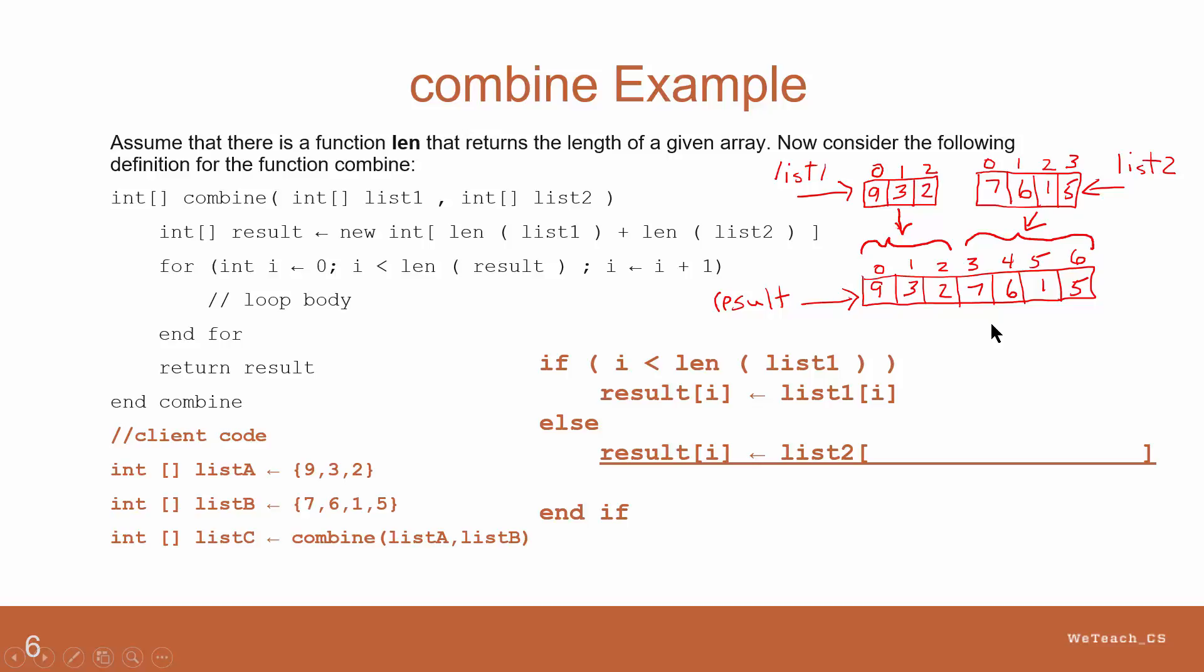Position 3 of result gets position 0 of list2. Position 4 of result gets position 1 of list2. Position 5 of result gets position 2 of list2. And finally, position 6 of result gets position 3 of list2.